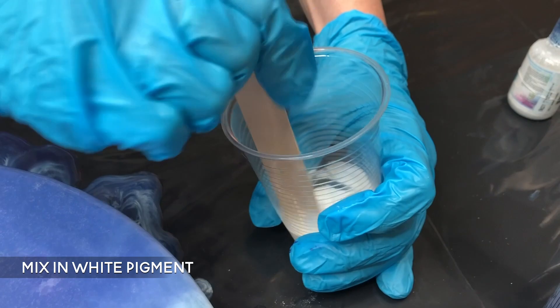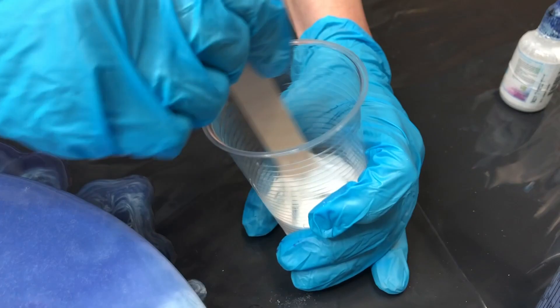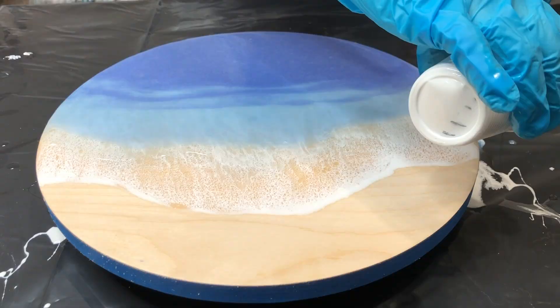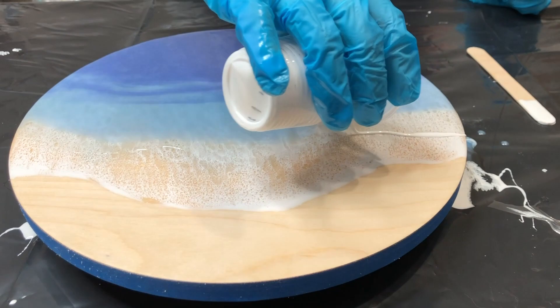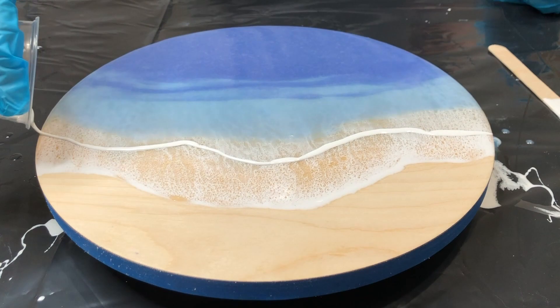Now it's time for the white for the wave. Since my bottom layer is already cured, we're fine using our heat gun for the second layer. Again, I'm going to do a thicker line because I want more pigment in order to blow it all the way to the top, because that's the look I'm going for.